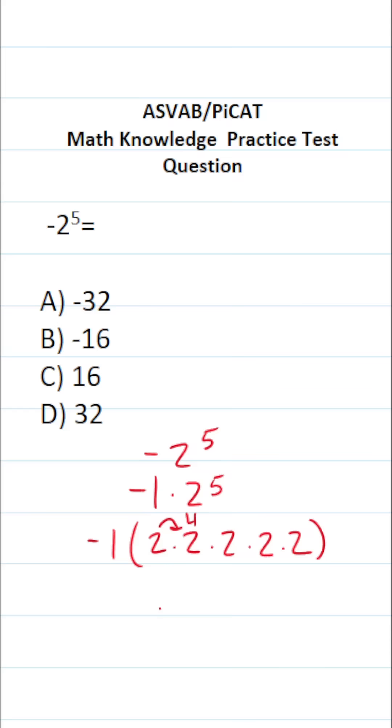Two times two is four. Four times two is eight. Eight times two is 16. 16 times two is 32. So this is negative one times 32. Negative times a positive is going to be a negative. So this is negative 32.